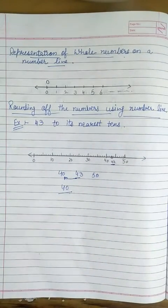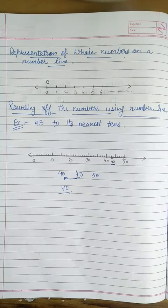In this way we can estimate any number to its nearest tens, hundreds, or thousands using a number line.